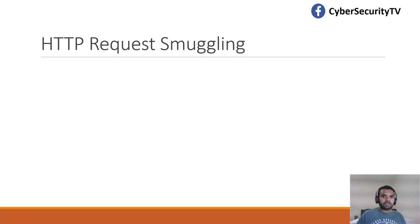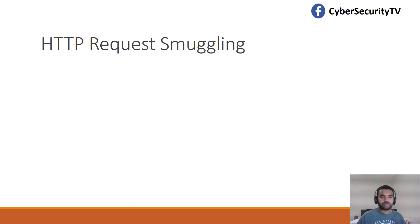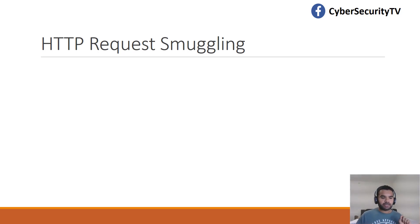HTTP request smuggling exploits the fact that some specially crafted HTTP messages can be parsed and interpreted in different ways depending on the agent that receives them. For any request you have a front end and a back end. If the software or version of software is different at the front and back end, they might interpret the same message differently — and that's the weakness the attacker is exploiting.